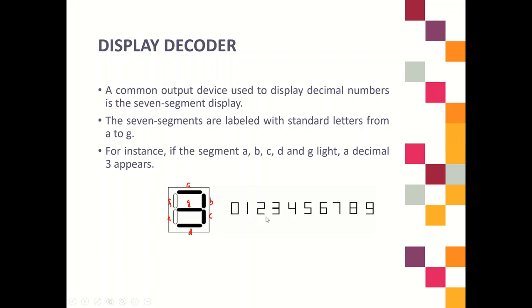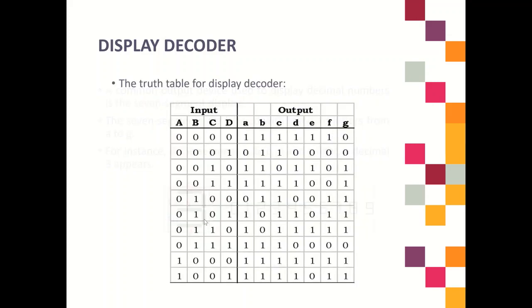You need to think: if you want to display 0, which segments need to be lit? For decimal 0, the segments that need to be lit are A, B, C, D, E, and F — it will shape like a 0. The truth table is based on this kind of situation for each decimal value.